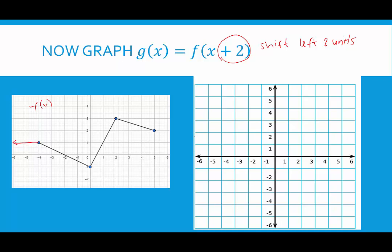So we'd now be at negative 6, positive 1 here. And this would move 2 units to the left, so it would be at negative 2, negative 1. And this one would move 2 units to the left, so we'd be at 0, 3 instead of 2, 3. And this one moves 2 units to the left, so we're now at 3, 2 instead of 5, 2.